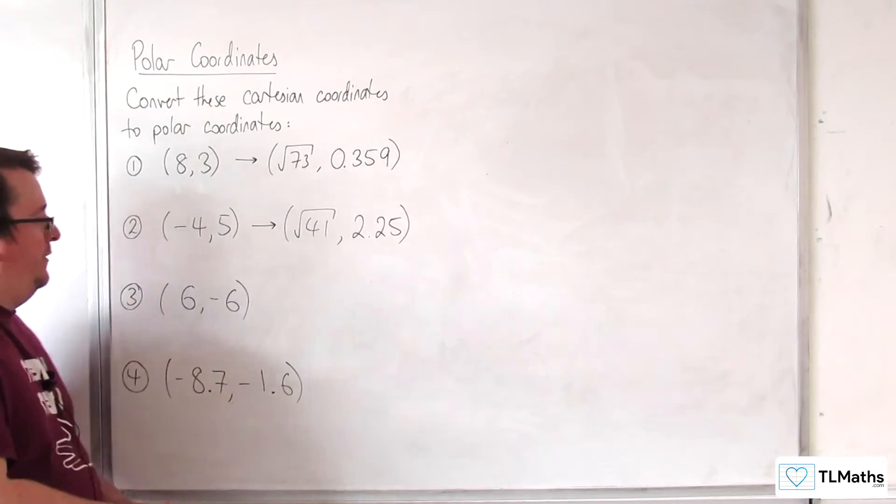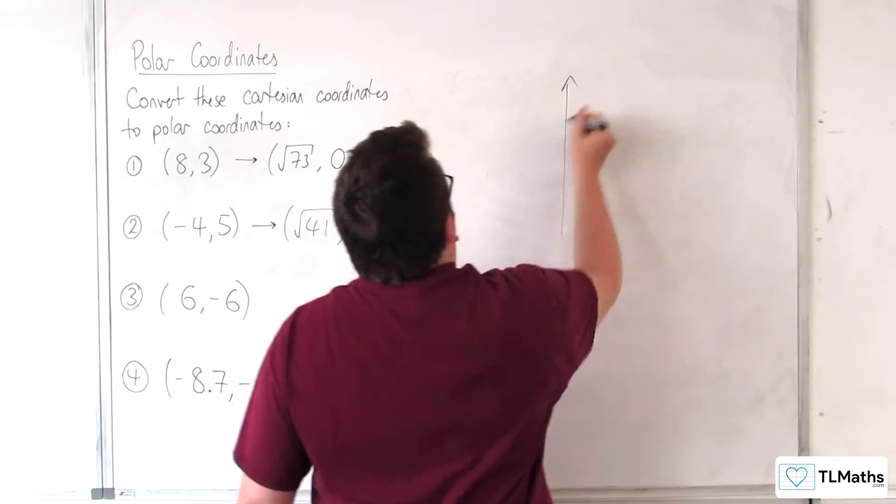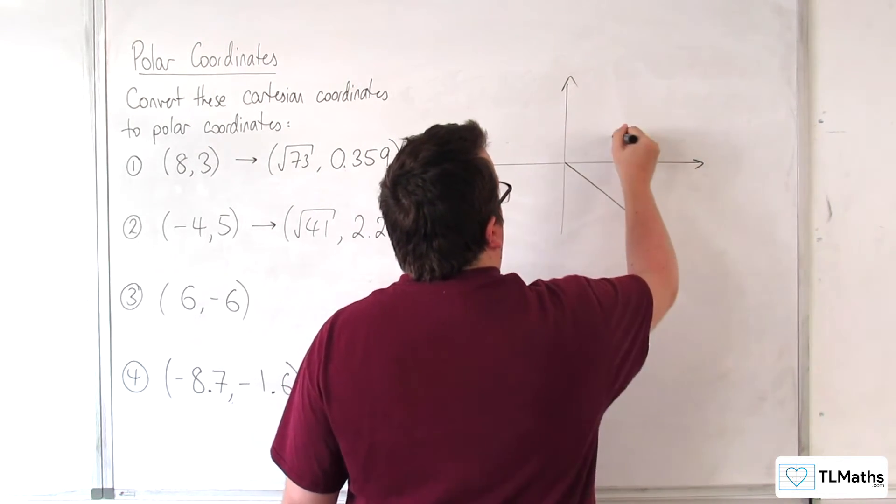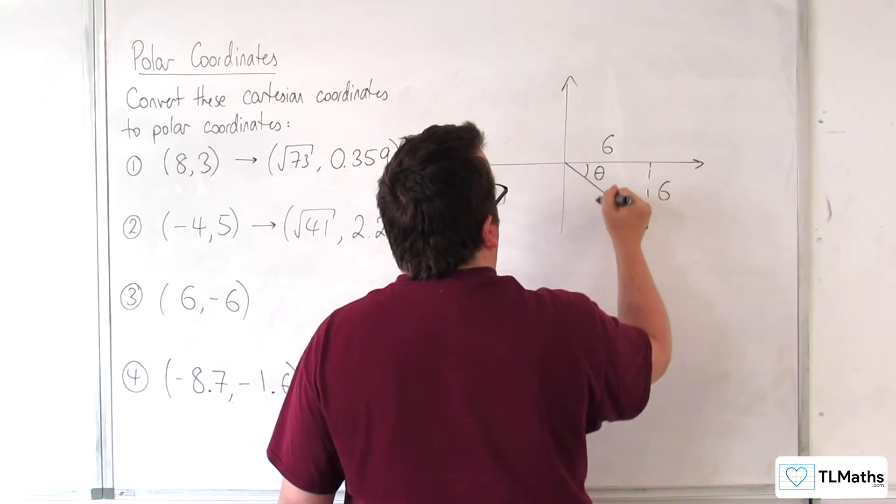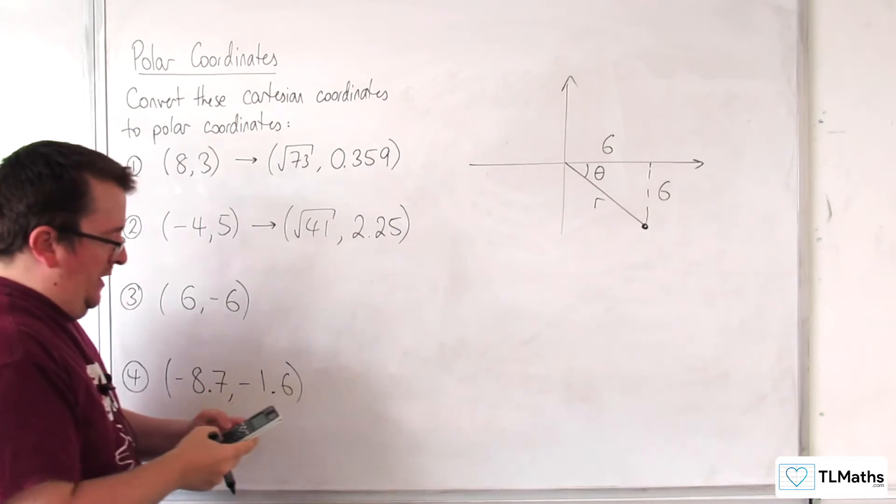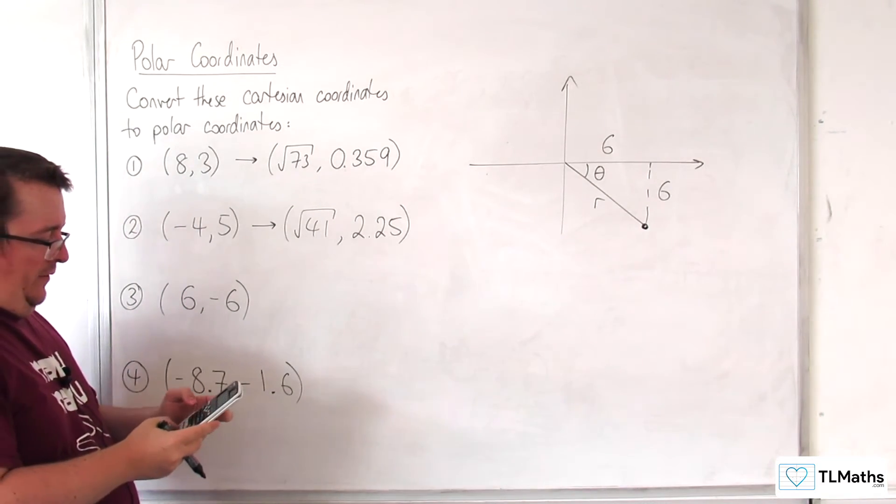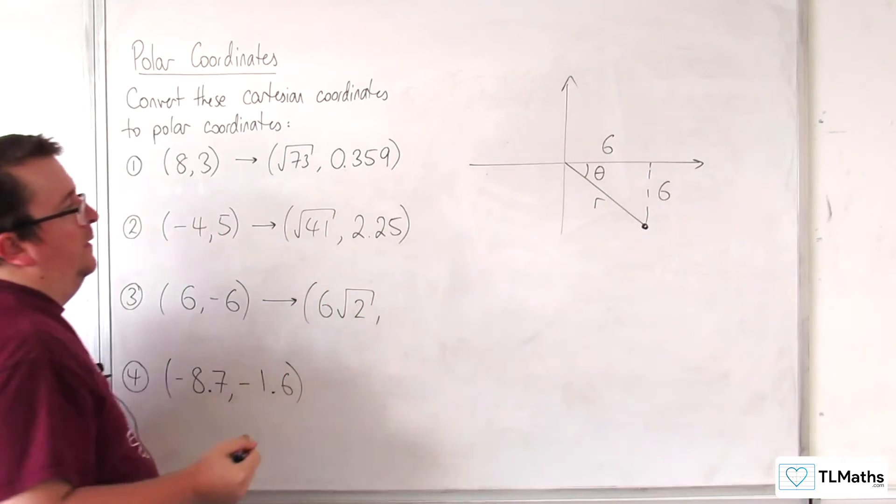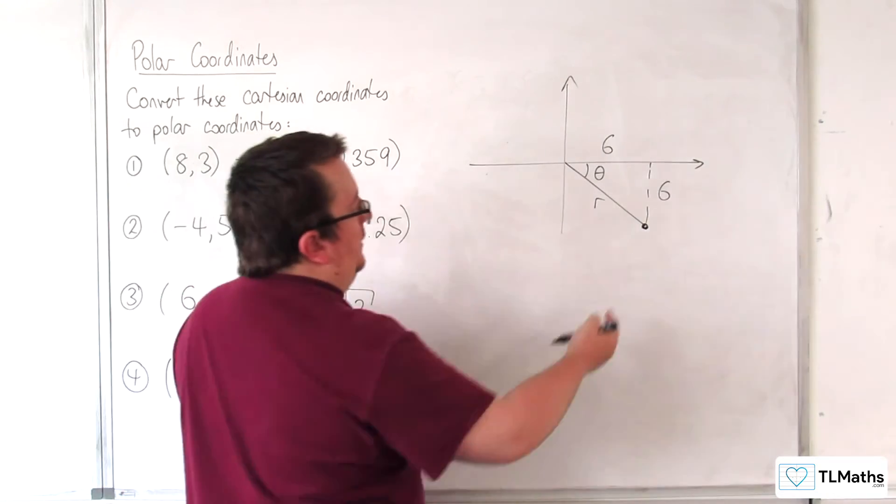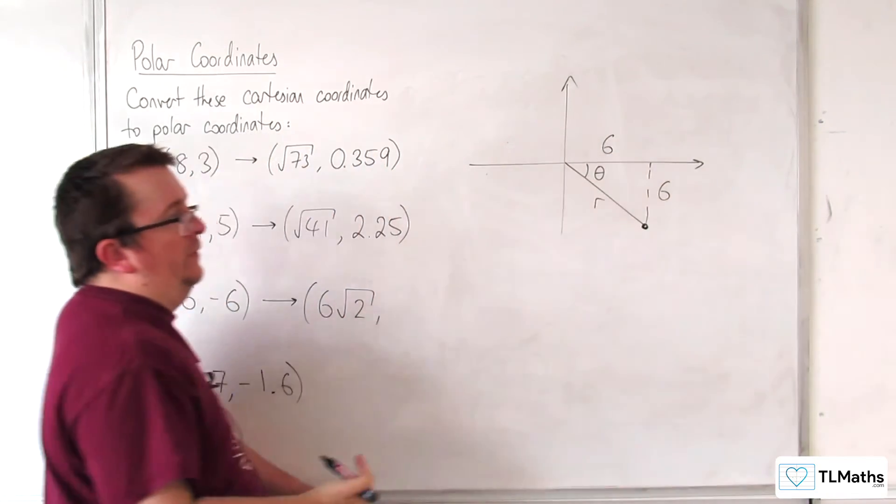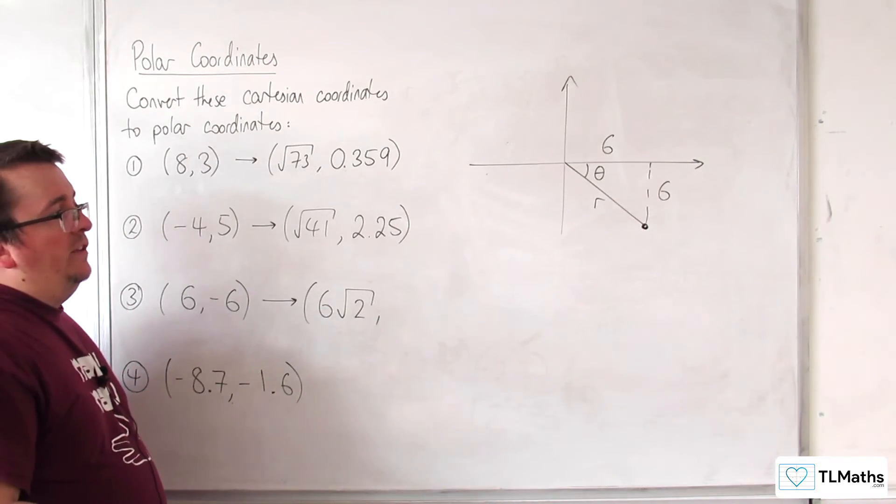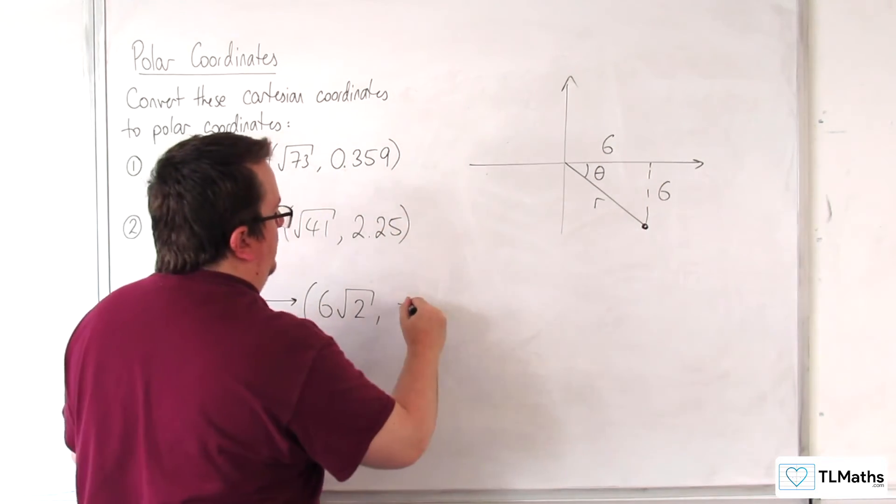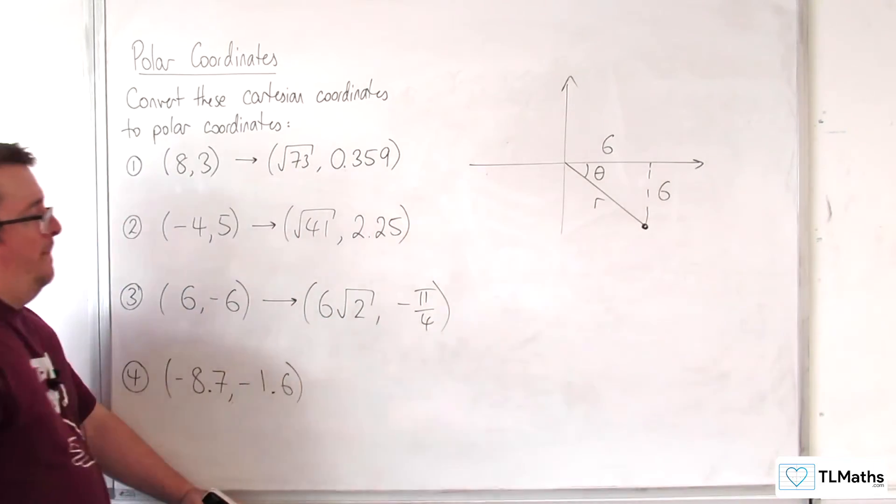So let's look at (6, -6). So 6 minus 6 is down here. There's my angle that I need, there's R. So the square root of 6 squared plus 6 squared is 6 root 2. And the angle is going to be inverse tan of 6 over 6, so inverse tan of 1, which is going to be pi over 4. And because we are in the negative direction, so we're going clockwise round, it'll be minus pi over 4.